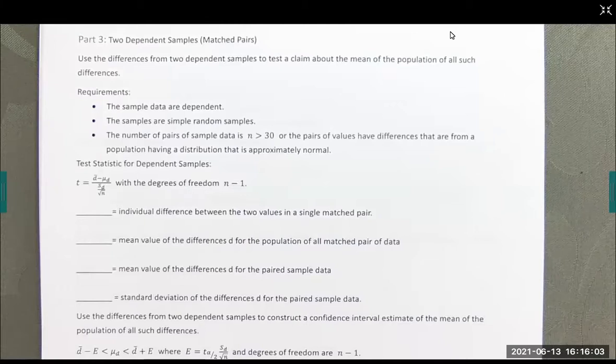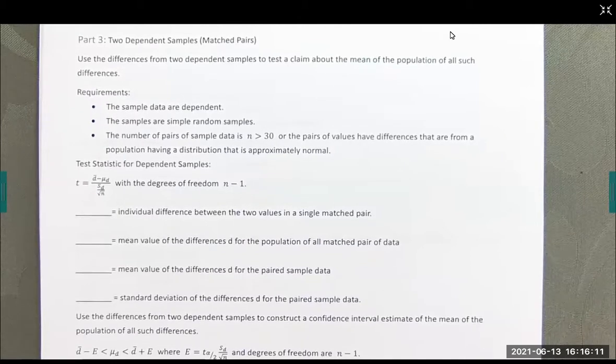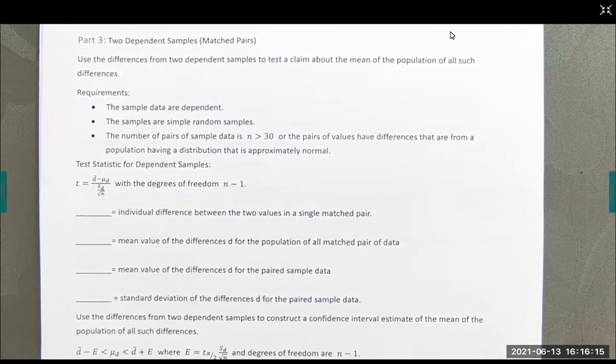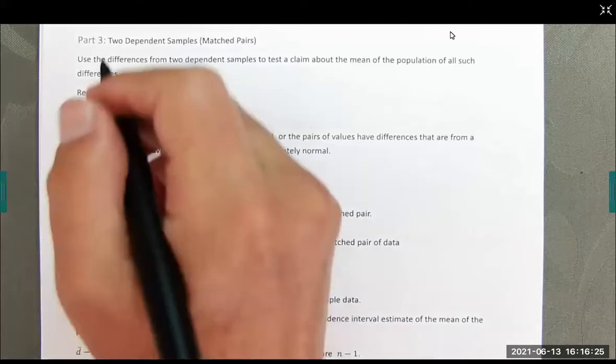This is again comparing two different sets of data, and this will be a little bit different though, because when they're independent we can compare them directly with one another. We're going to have to do some fancy stuff here. So we're going to have two dependent samples. We're going to test a claim about the mean of the population of all such differences.